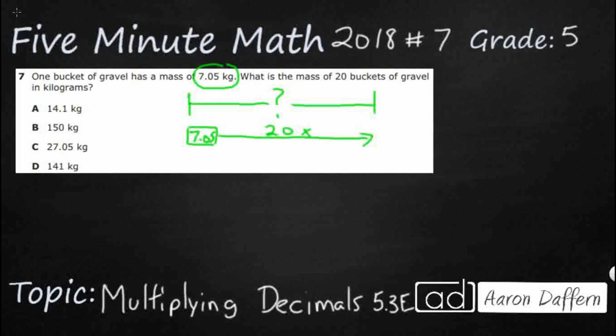We're going to take that 7.05 and multiply it 20 times. We can actually estimate this to give us at least a clear idea of what we're doing. Let's take a look at 7.05.